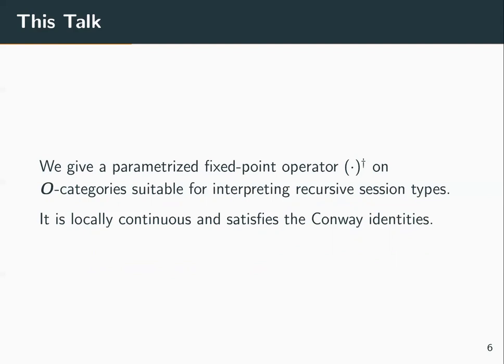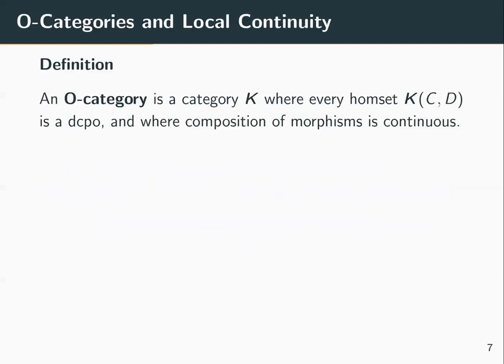It will also satisfy the Conway identities, which are a collection of identities very useful for reasoning about fixed points. So let's begin by reviewing some basic definitions. An O-category is a category where every hom-set is a DCPO and where composition of morphisms is continuous.